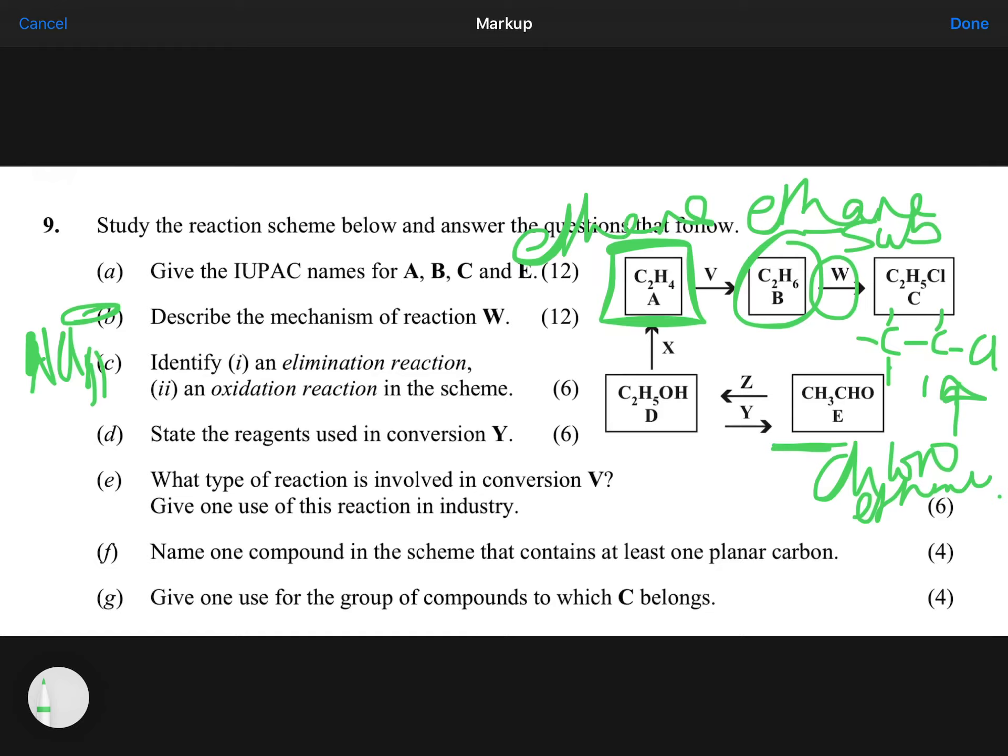Identify an elimination reaction. The only elimination reaction on your course is an alcohol to an alkene. So it has to be X. And identifying an oxidation reaction then, that has to be Y there, because you're going from the alcohol to the aldehyde. State the reagents for Y. I don't think we've had that one so far. Sodium dichromate and H plus ions. And again, what would supply those H plus ions? Something like conc sulfuric acid. What type of reaction is involved in V? V, the minute you spot the alkene, you are thinking addition, so ionic addition.